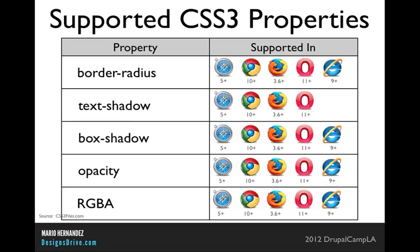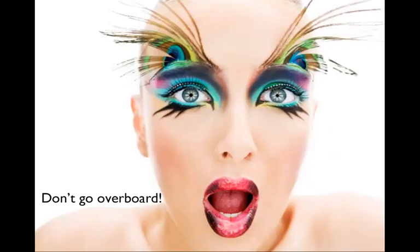Here are the CSS3 properties we'll be using today, along with their browser support. This is a set of properties that's safe to use — the browser support is very, very good. We'll be using pretty much all of them in our design. The key is not to overdo it. My personal design style is simple, clean, and minimal, so the hardest thing is stopping myself from going crazy with all the cool things CSS3 allows.